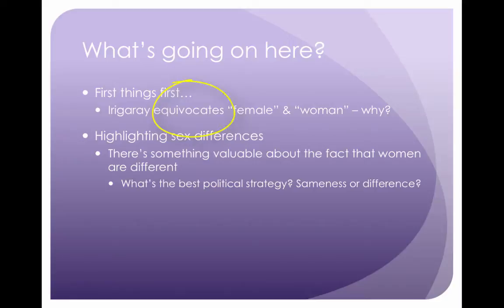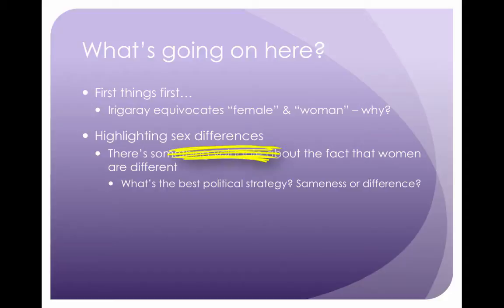I want to let you know that she is equivocating female and woman. By equivocate, I mean she's using them interchangeably, even though what we've learned in the gender section, female refers to the sex usually, and woman refers to gender. So why is Irigaray doing this? Possibly it's for effect, and I would be interested to hear what some of you guys think about this in maybe your discussion posts. But what she's doing here in this paper is she's highlighting sex differences — saying there's something inherently valuable about the fact that women are different.